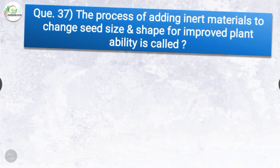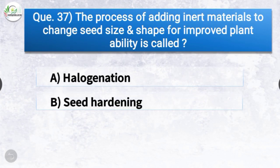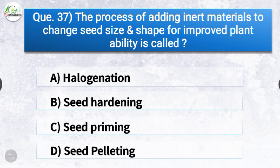Question number thirty-seven: The process of adding inert materials to change the seed size and shape for improved plantability is called — the options are halogenation, seed hardening, seed priming, or seed pelleting. The correct answer is option D — seed pelleting. The process of adding inert materials to change seed size and shape for improved plantability is called seed pelleting.